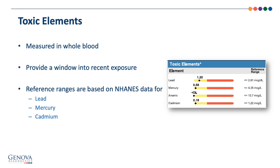The toxic elements include lead, mercury, arsenic, and cadmium, measured in whole blood. A whole blood measurement allows comparison of the patient's results to NHANES data, from which three of the reference ranges are set. The toxic elements section provides a window into recent exposure, not necessarily body burden — any elevations warrant further investigation into potential sources of current exposure. The window of time may vary from a few weeks to a few months. Reference ranges for lead, mercury, and cadmium are set according to published NHANES data; arsenic's range is set based on a questionnaire-qualified healthy cohort.